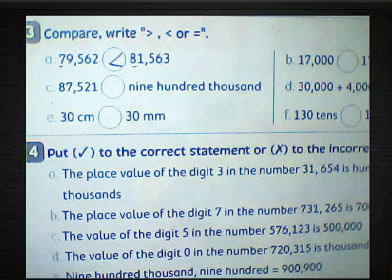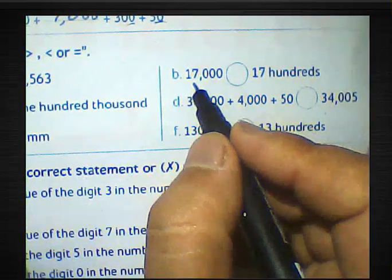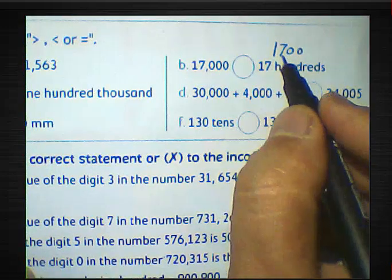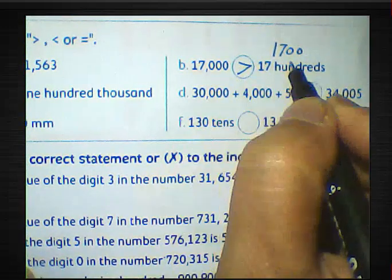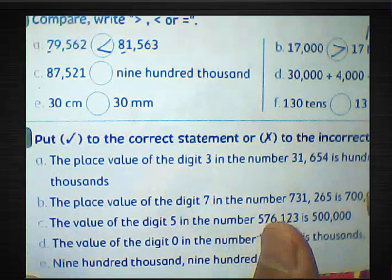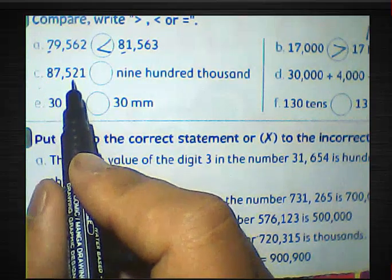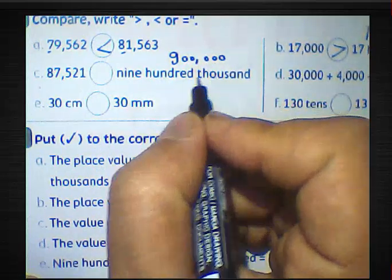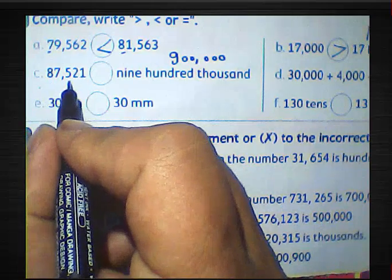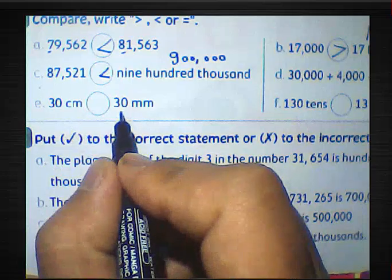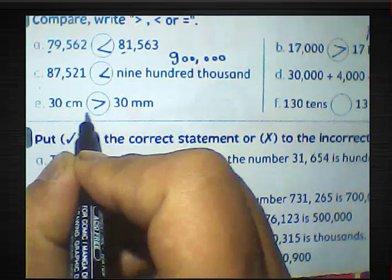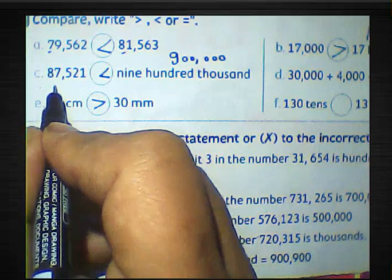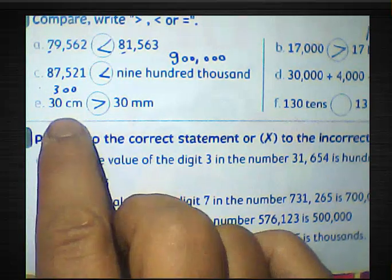Part B: compare 17,000 and 17 hundreds. 17 hundreds means 1,700. So 17,000 is more than 1,700. Part C: compare 87,521 and 900,000 — 900,000 is more than 87,521. Part D: compare 30 cm and 30 mm — 30 cm is greater than 30 mm because converting 30 cm to mm gives 300 mm, which is greater than 30 mm.